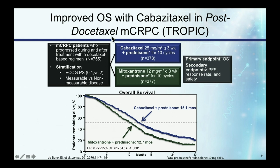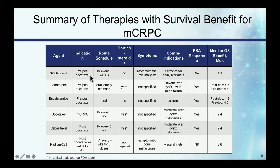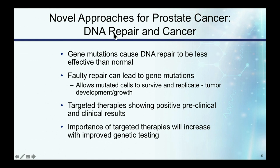Cabazitaxel, a derivative of docetaxel, has activity in patients who fail primary chemotherapy, with about a three-month improvement in median survival. Interestingly, when compared head-to-head with docetaxel up front, there's no survival difference — median overall survival is about two years with either agent. Even at lower, less toxic doses of cabazitaxel, survival is about 25 months. To summarize available agents with survival benefits: Sipuleucel-T, abiraterone, cabazitaxel, and radium-223.